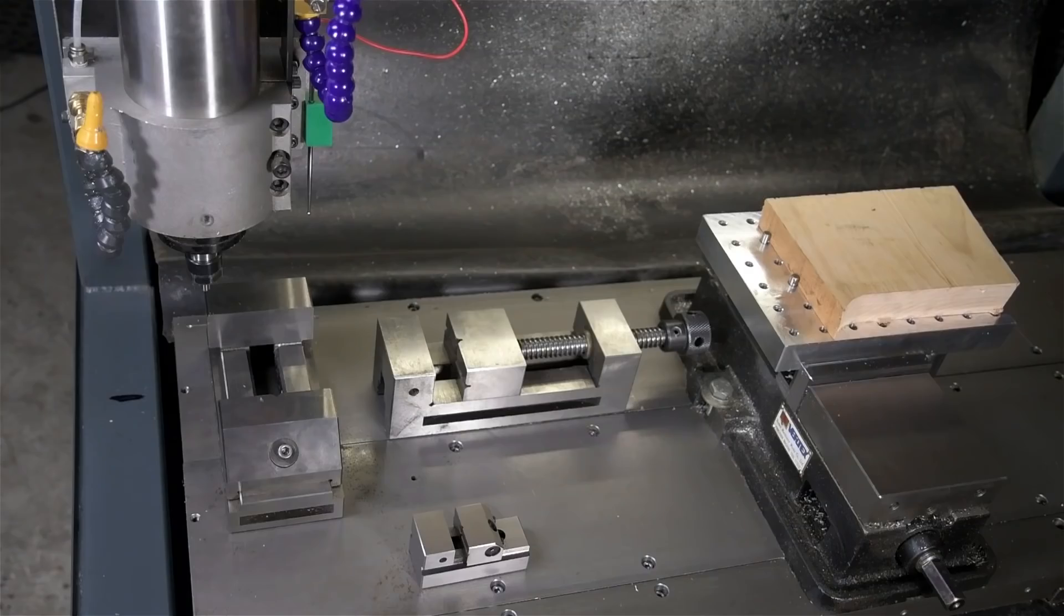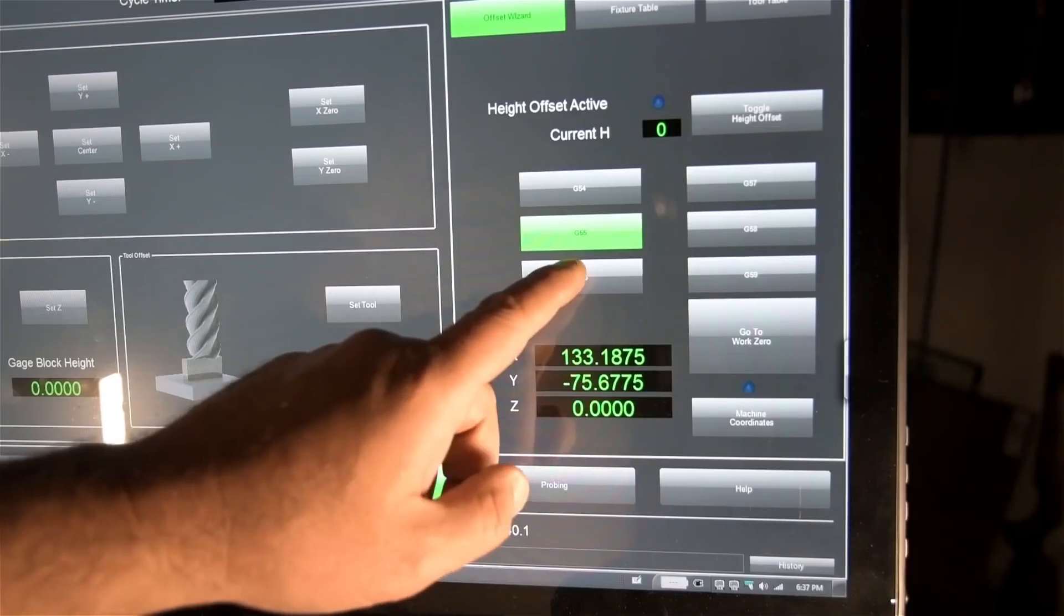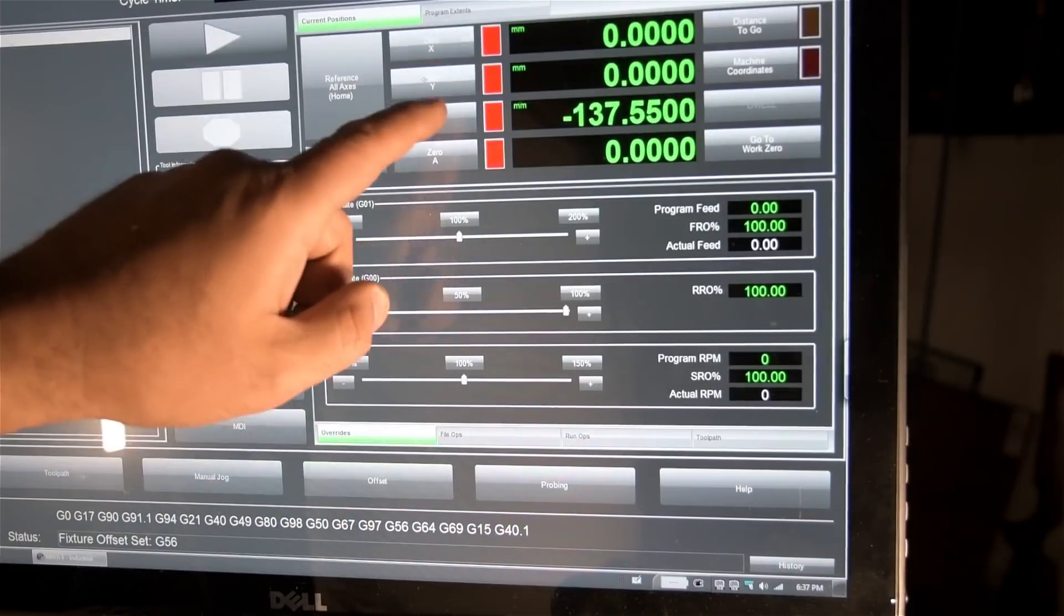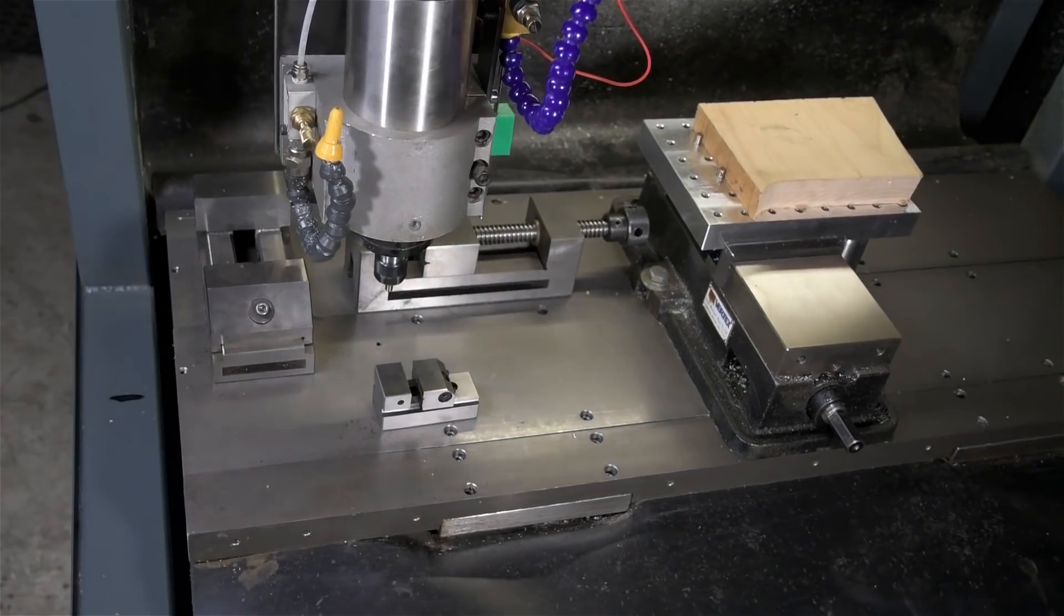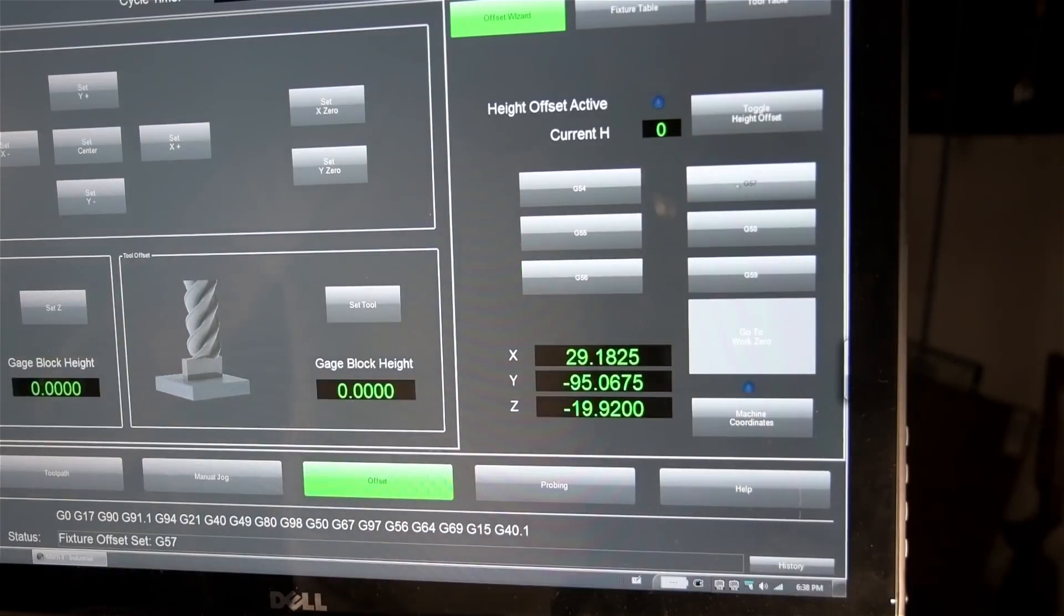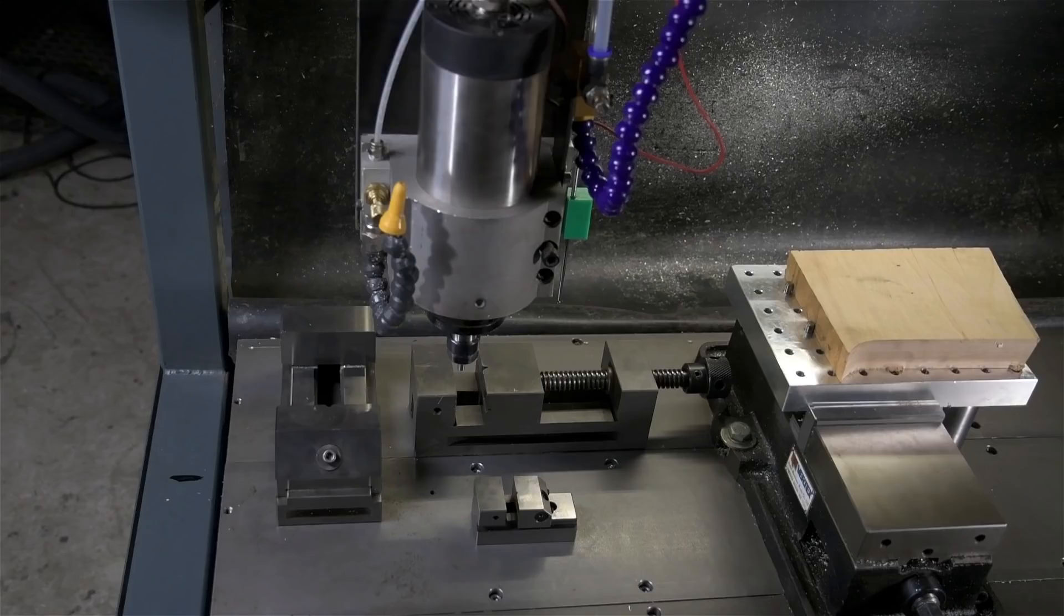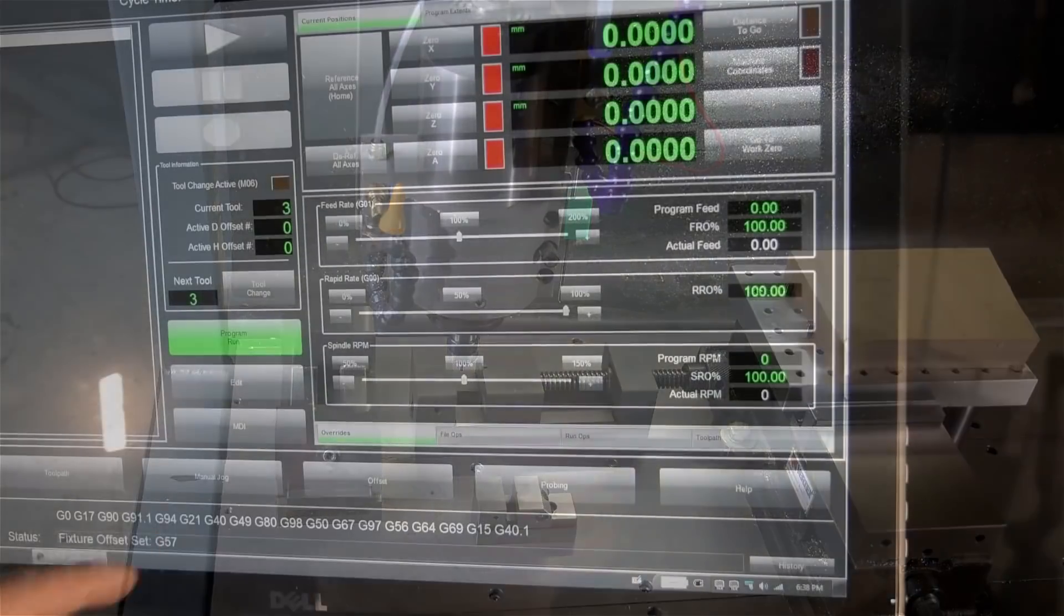When I get there, I'm going to go into a new offset, say G55 in this case, and zero out the DROs. Let's do the same thing for the next vice: G56 and zero the DROs there. And then again, G57, zeroing out each time I zero the spindle again, maybe with an edge finder. Now that I have the four vice locations defined in their own offsets, I can quickly and easily get back to any of those reference frames.